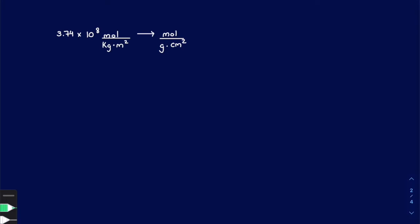Next we have 3.74 times 10 to the 8th moles over kilogram times meters squared, and we need to get to moles over grams times centimeters squared. Moles to moles stays the same. Kilograms goes to grams — that's one conversion. Meters squared to centimeters squared — that's another conversion. There's a deviation in how you need to handle squared unit conversions, but first let's tackle going from kilograms to grams. We start with 3.74 times 10 to the 8th moles over kilogram times meters squared.